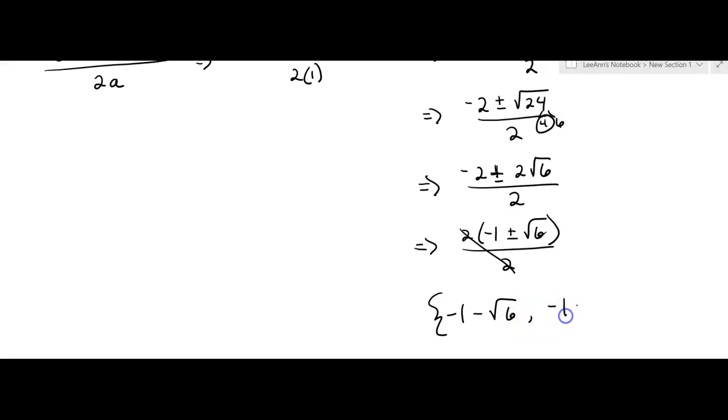And so our answers are going to be negative 1 minus the square root of 6 and negative 1 plus the square root of 6. And so we don't have imaginary solutions this time, they're just real numbers but they're irrational because of the square root of 6. Okay, there you go.